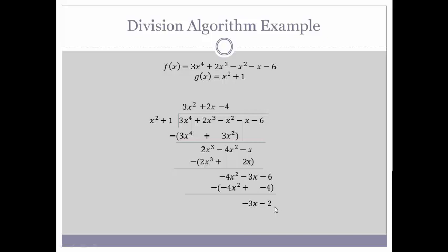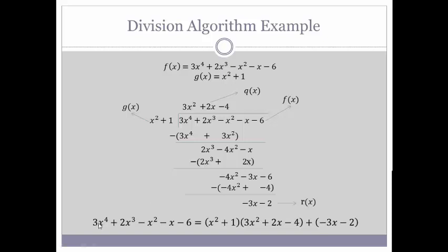Now that we know that the degree of the remainder is smaller than the degree of G of X, we know that we're done because we have our remainder. So just to remind you: we defined our F of X and G of X, and through long division we've found Q of X and R of X. I like to think of R of X as the remainder — the R of remainder — which means that degree has to be less than G of X. So we can now say that F of X equals G of X times Q of X plus R of X.